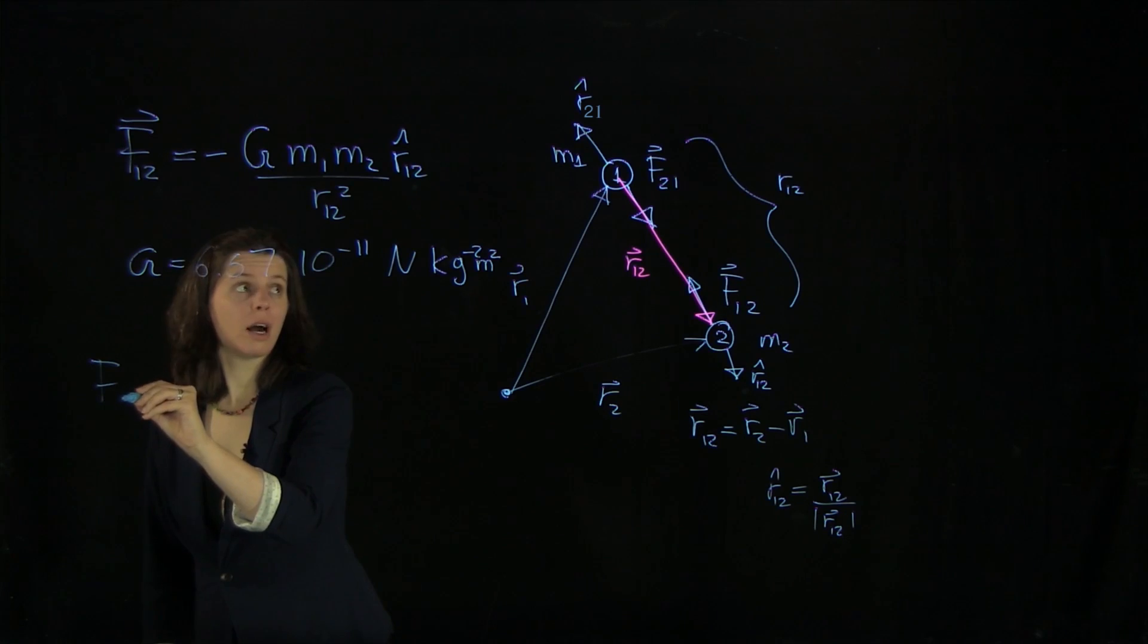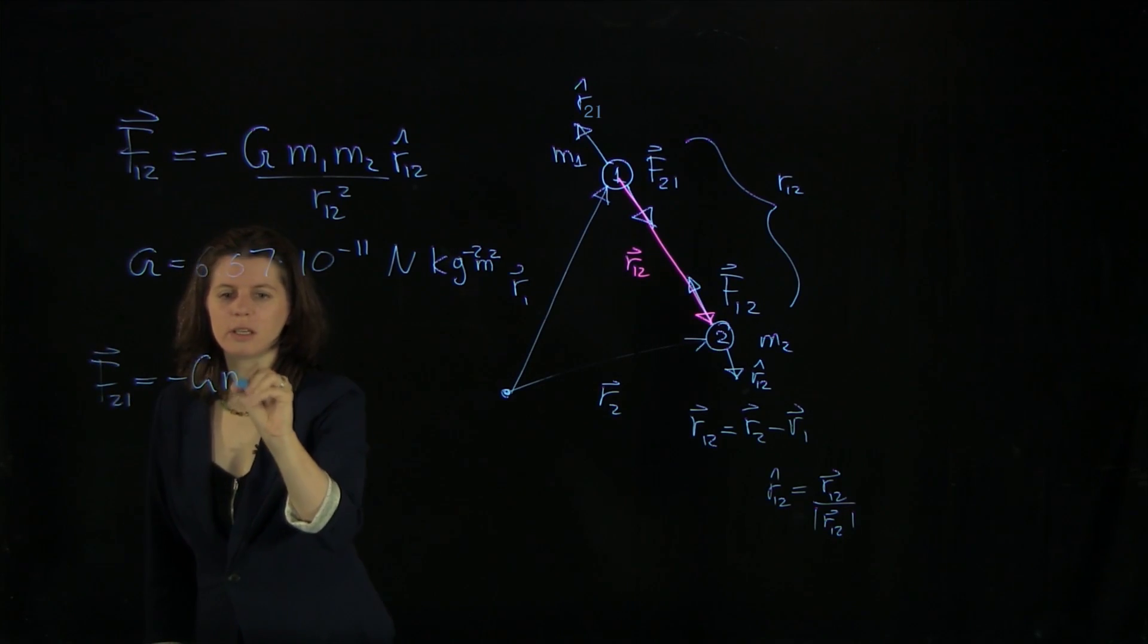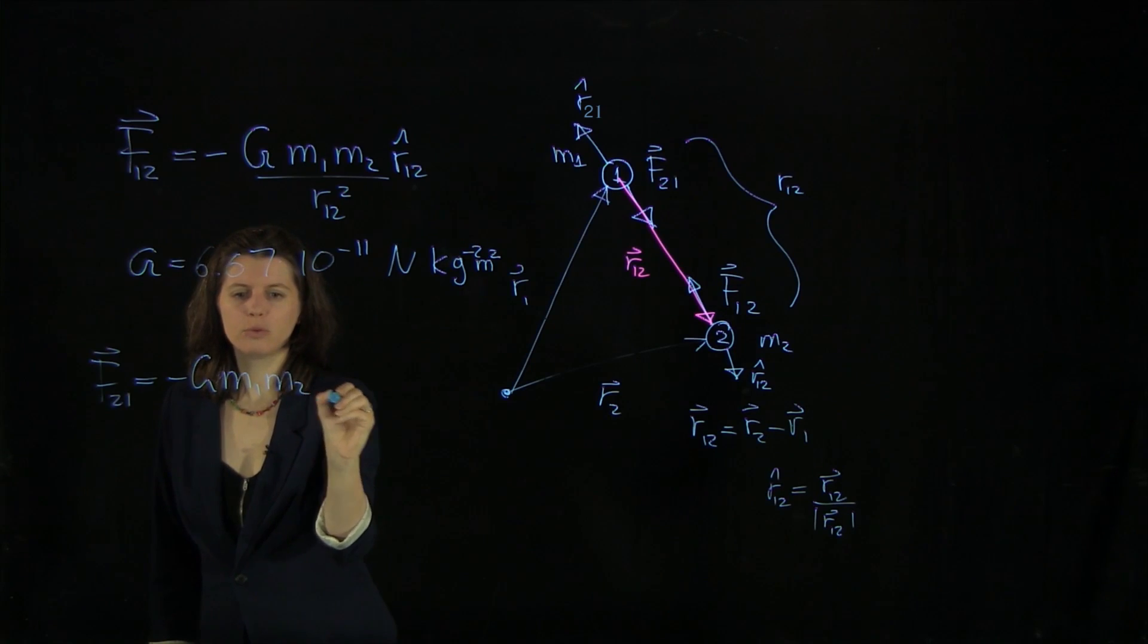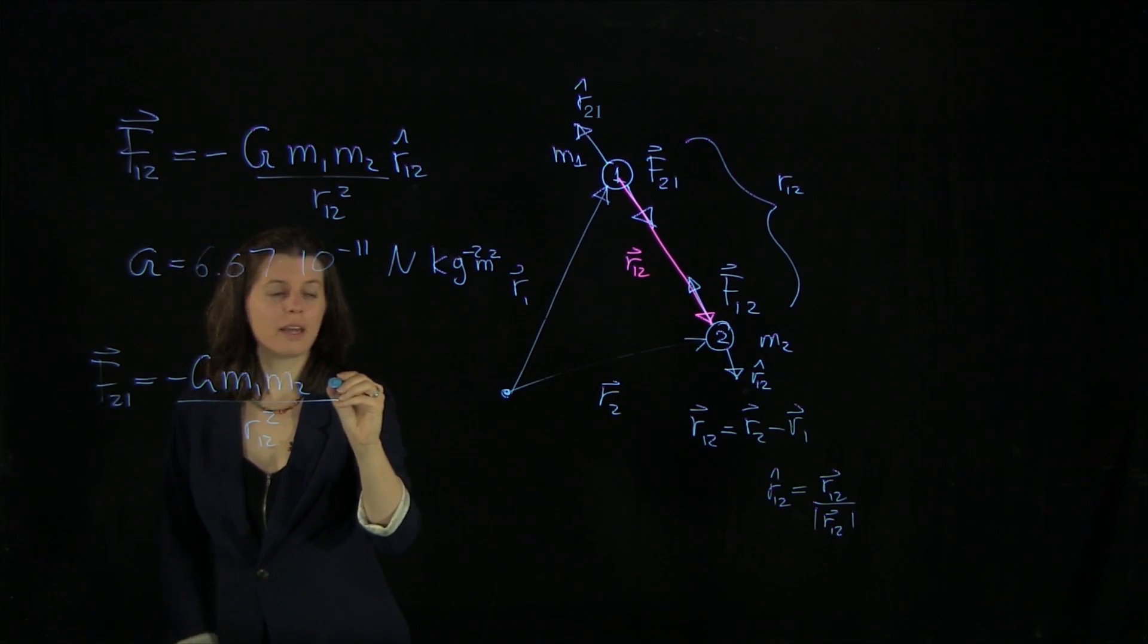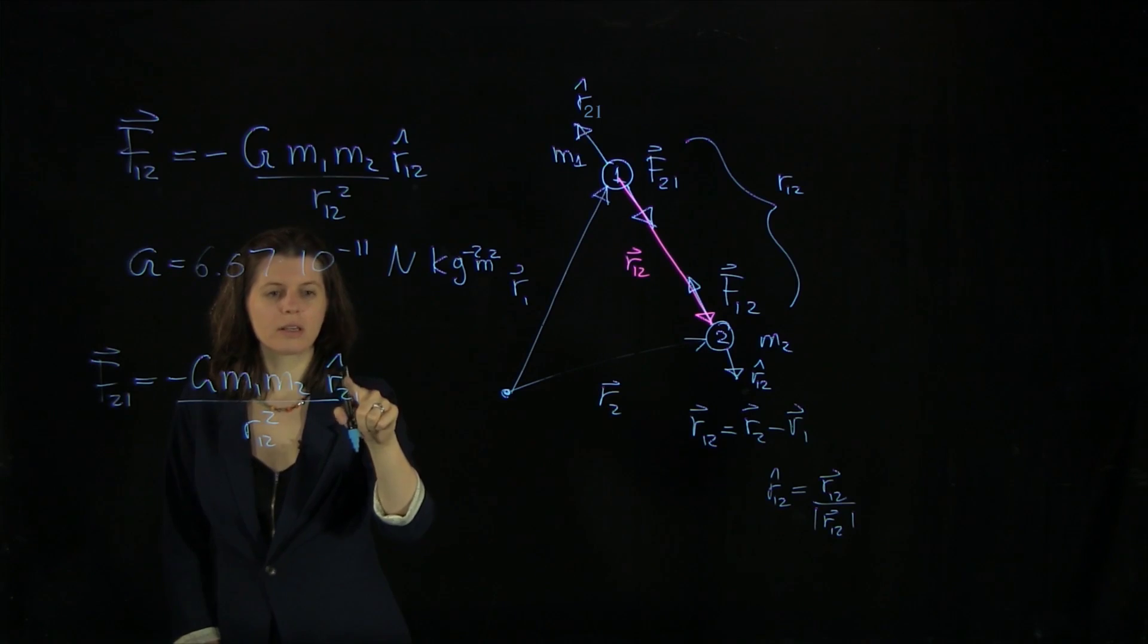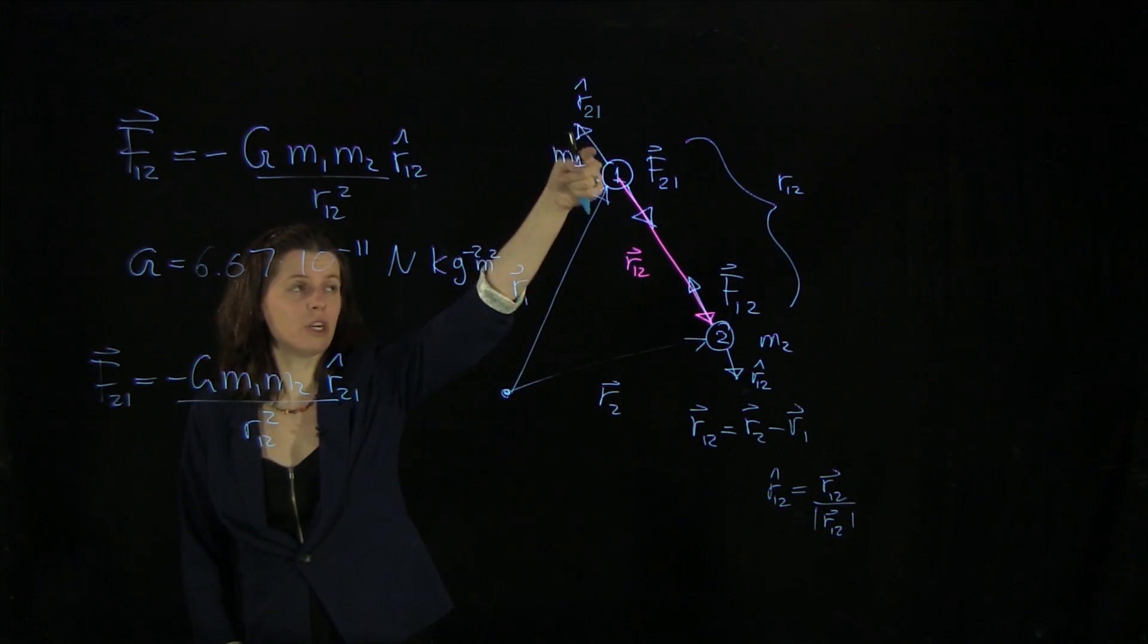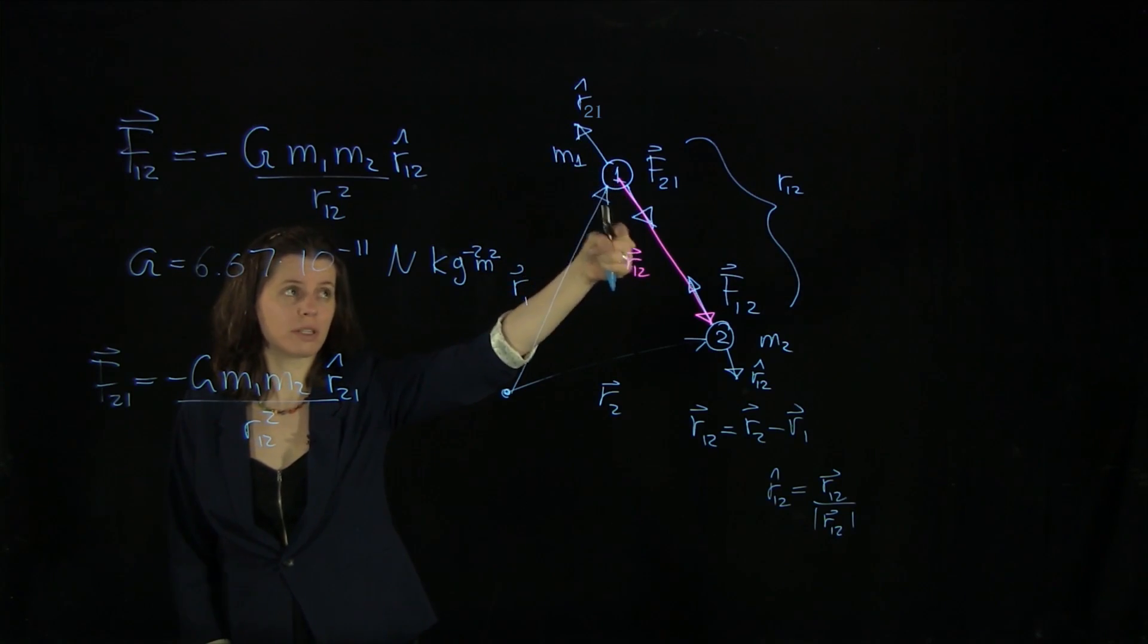So we have F21 equals minus G m1 m2 over r12 squared. And in terms of the unit vector, we now have r21 hat here. So again, this minus goes with this unit vector. And that one is pointing here in the opposite direction then of force.